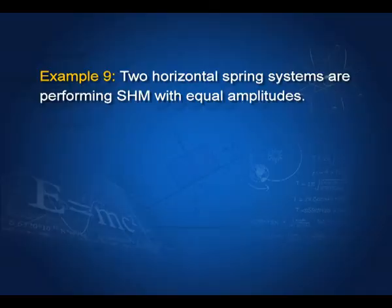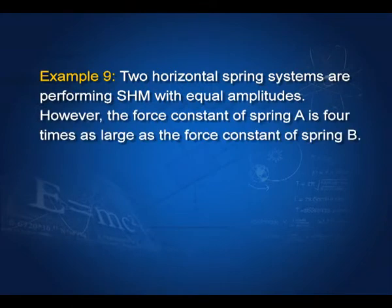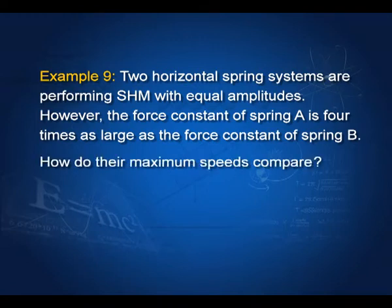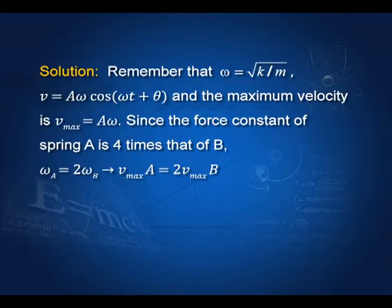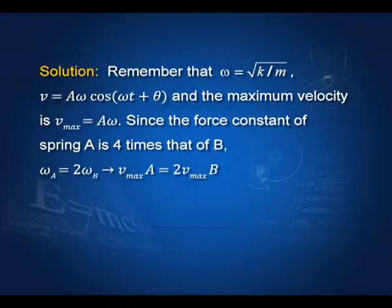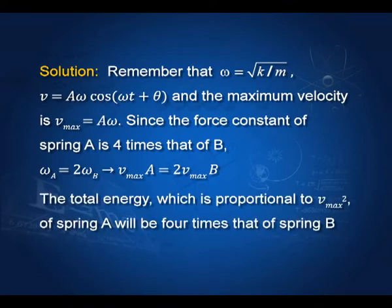Two horizontal spring-mass systems perform SHM with equal amplitudes, but the force constant of spring A is 4 times that of spring B. Since ω ∝ √k, ωA = 2ωB. The maximum velocity is v_max = Aω, so v_max,A = 2·v_max,B. The total energy, proportional to kA², will be 4 times greater for spring A than for spring B.